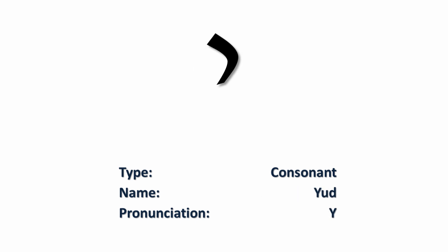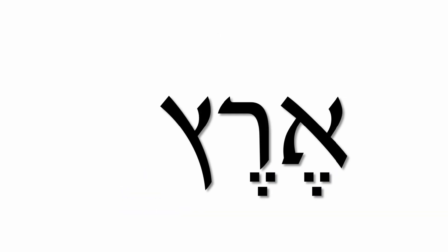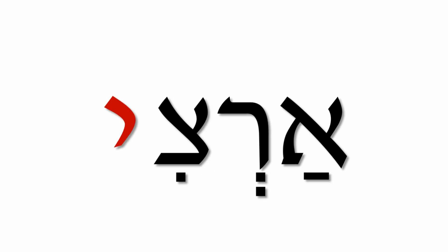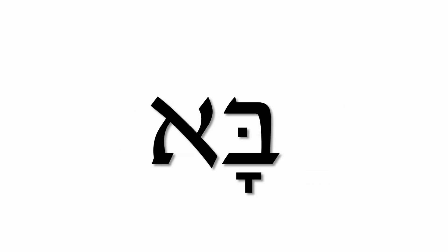The next letter is the letter yud, which has a 'y' sound. When the letter yud is placed at the end of a word — for example, eretz becomes artzi — it means 'my land.' So the letter yud is commonly used as a suffix added to nouns meaning 'my.' When the letter yud is prefixed to a verb, it means present tense. For example, ba means 'he came' (past tense), but yavo means 'he comes' (present tense). Similarly, amar means 'he said' (past tense), but yomer means 'he says' (present tense).